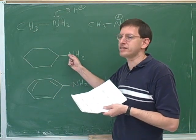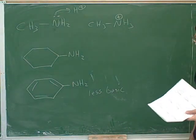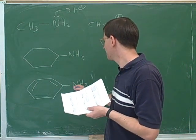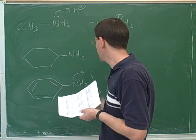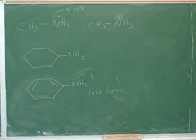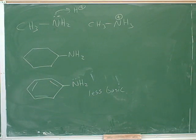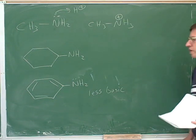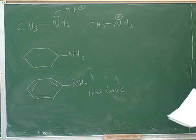It turns out that this amine — aniline — is less basic than this other one. Can you come up with any reason? The aromatic one is less basic. Can you think of any reason why this would be less willing to donate electrons? It's less willing to donate electrons because it can spread the charge throughout the ring. What types of things make good bases? Negative things. Right.